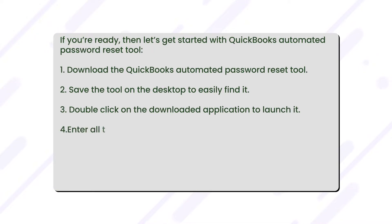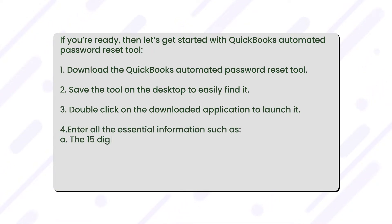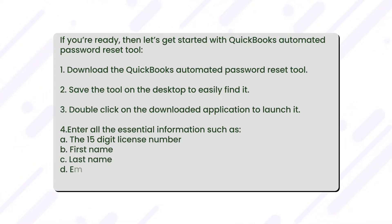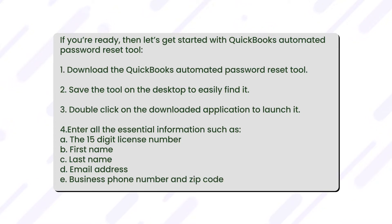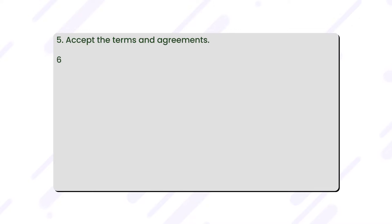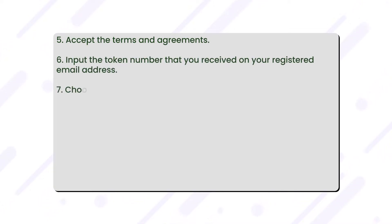Enter all the essential information such as the 15-digit license number, first name, last name, email address, business phone number, and zip code. Accept the terms and agreements, and input the token number that you received on your registered email address.